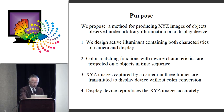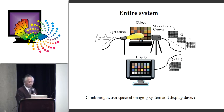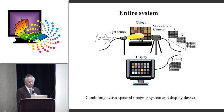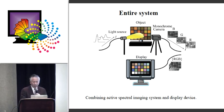Then the display device reproduces the XYZ image accurately. We designed the adjustment element with device characteristics of both camera and display. The color matching function including such device characteristics are projected onto the object. The camera captures the image corresponding to the XYZ image, which is then transmitted to the display in the form of a tristimulus signal.